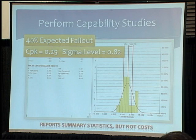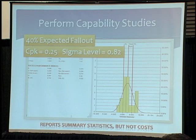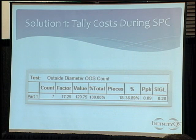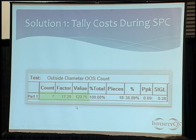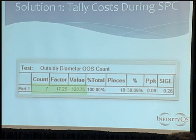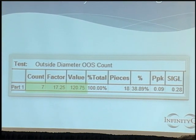I want to go through a couple of examples, assuming you're already collecting this kind of data. What additional things can you do to start gathering your costs? Here's the spreadsheet view of that first chart — 18 pieces, 7 of which fell out. If we simply put a cost component in there — in this case the factor value of $17.25 — that's what I've assigned as the cost if we have to scrap the part at this operation. My value add to this point is $17.25. At any point where things drop out, just multiply by that factor and you start tallying up costs.